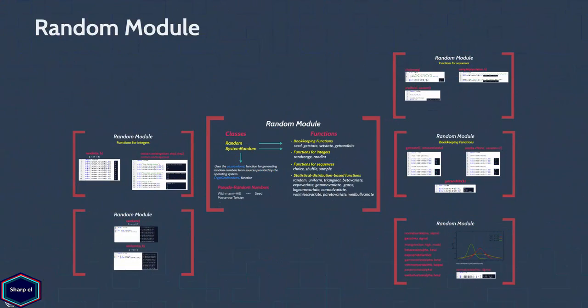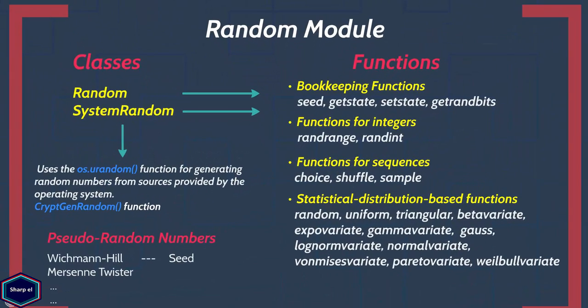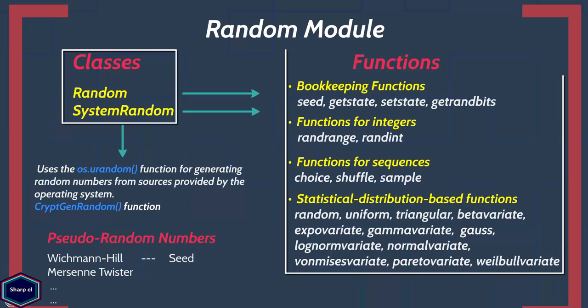Welcome to my tutorial series on modules. Today I will cover the random module. The random module provides two classes, random and SystemRandom, and a variety of functions for generating pseudo-random numbers.